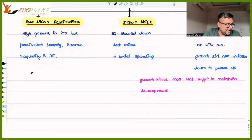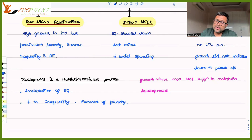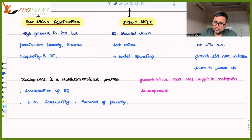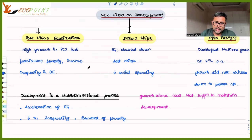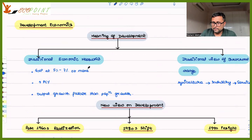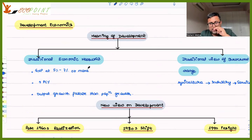If you write an answer related to this, you should write that development is a multi-dimensional process because it is not just about growth. Yes, acceleration of growth is a part of it, but you also have to work on reduction of inequality and removal of poverty. In this class we have looked at two views on development — the view up to the 1960s and how it changed after the 1960s.